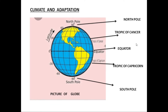Near the equator, direct sun rays fall, making it the hottest area of the world. The Tropic of Cancer lies between the equator and the north pole, and the Tropic of Capricorn lies between the equator and the south pole. The areas between these tropics have medium temperature — neither very cold nor very hot.